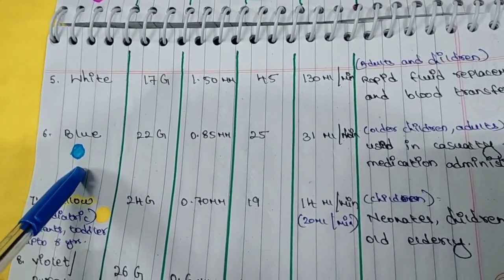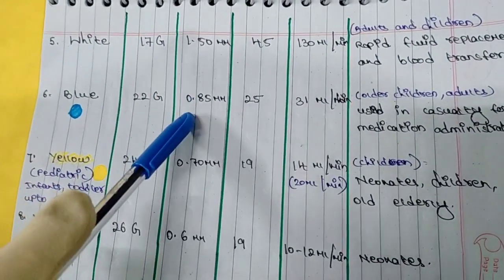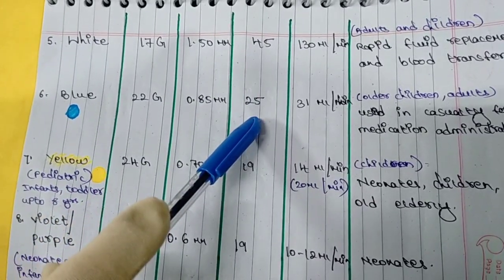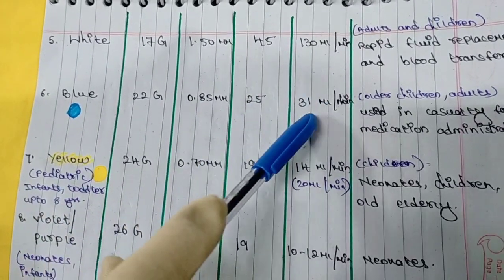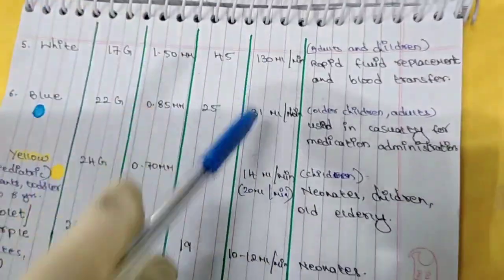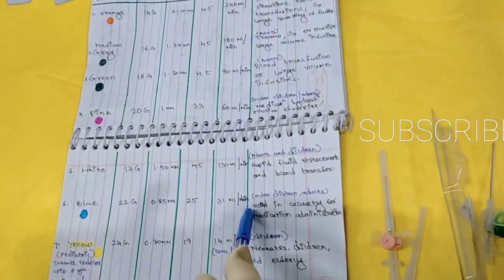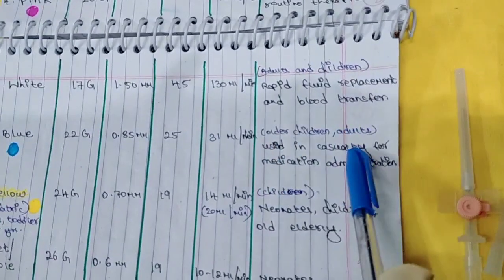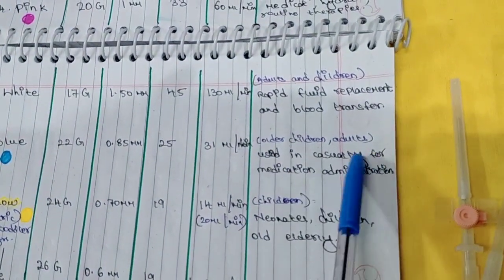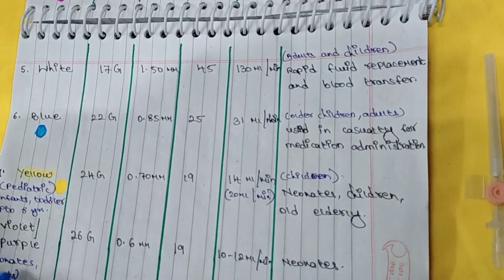Then next you have the blue cannula, which is 22 gauge. The outer diameter is 0.85 mm and length is 25 mm. The flow rate is 31 ml per minute — though flow rates can vary by manufacturer. This is used in older children and adults, and is commonly used in casualty for medication administration.